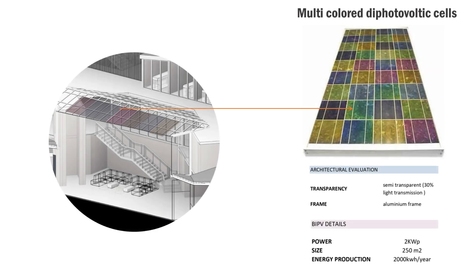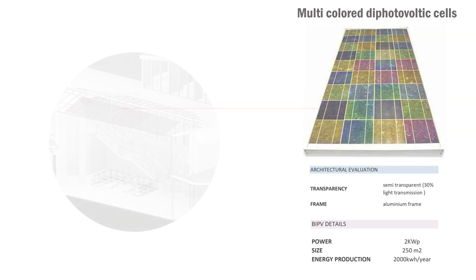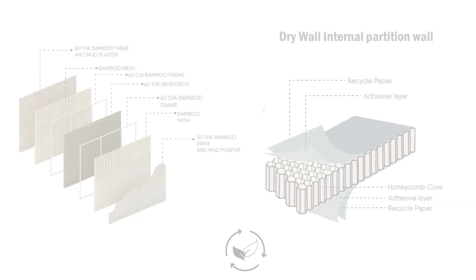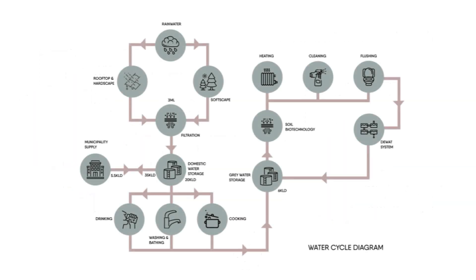We calculated the lux values to see the illuminance level being achieved inside the building. The second image shows the radiation map of the entire build form and the amount of solar exposure the building receives. The left exploded diagram shows the external wall building material, which is bamboo-reinforced hempcrete, and the right one shows the internal wall dry partition material, which is honeycomb coal.